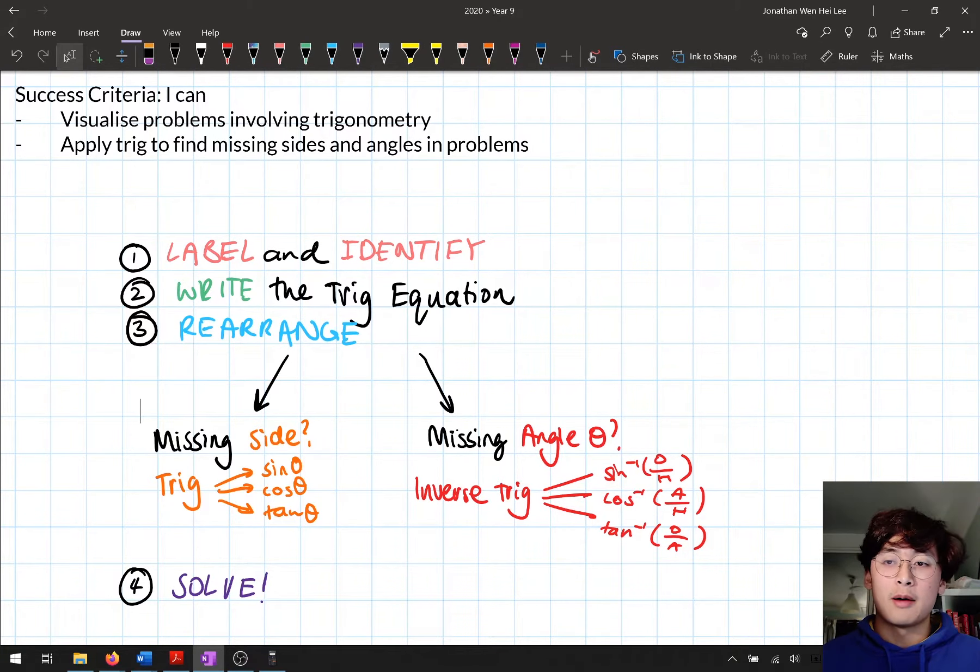Step three is you need to figure out what operations and formulas you're going to use. If we're finding a missing side, are we going to use trig or inverse trig? Well of course you're going to use regular trig. If you're trying to find an angle however we're going to be using inverse trig. Make sure you know what you're going to be using to solve this problem.